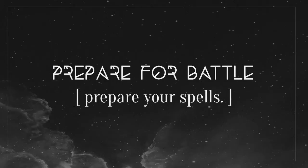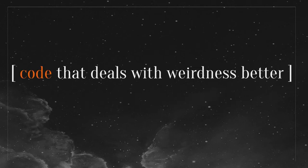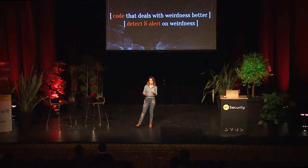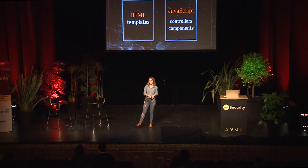So how do we go about dealing with all that weirdness? Something that's very important is writing code that deals with weirdness a little bit better. You're never going to be able to say it's just a question of when you're going to introduce an XSS vulnerability - it's a matter of time. You can never fully eradicate it, but you can write code that behaves a little bit better. You can also write tools that detect and alert when such weirdness happens. And that's the mission of what we're going to try to do today.